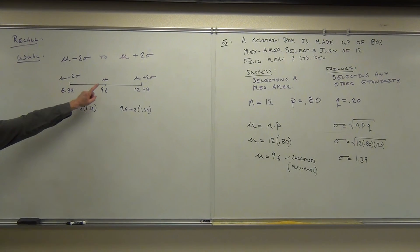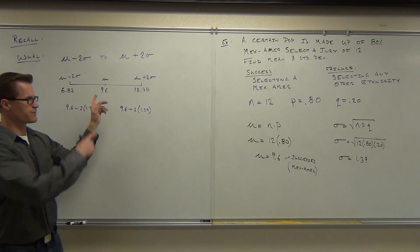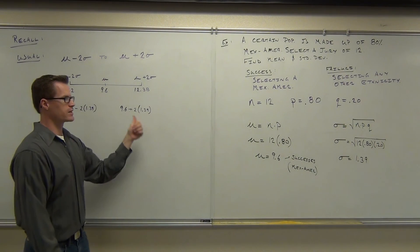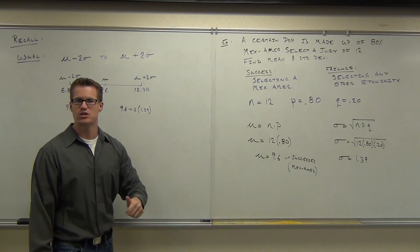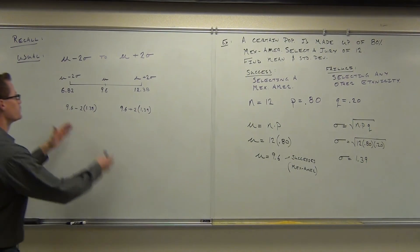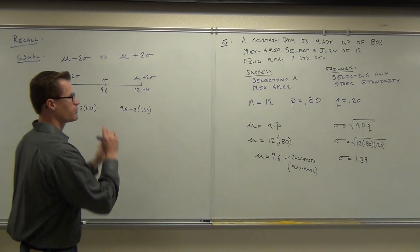To find your usual and unusual, we take our mean. That's in the middle. We subtract two standard deviations. Or add them twice. That's the same situation in every case. So we get a range of 6.82 to 12.38. Do you agree that that's the usual case here?